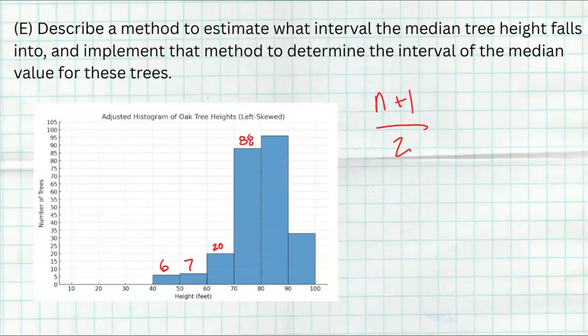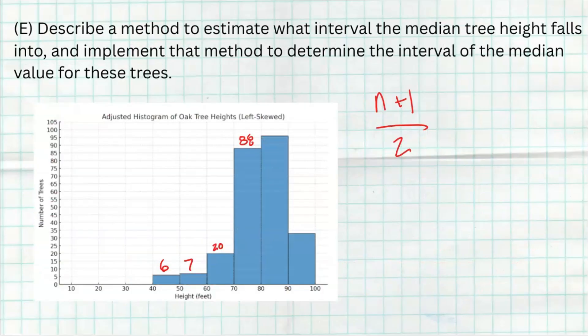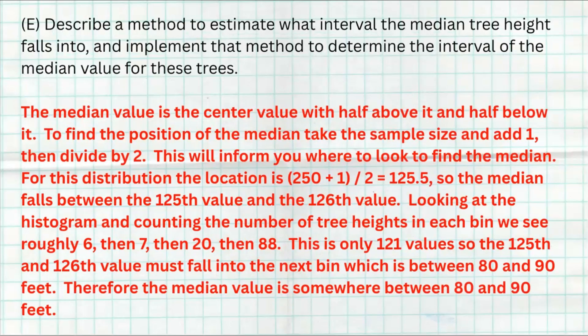I started counting. There's about six values in this first bin, seven values here, 20 values in this bin, and then this bin looks like 88. If you stop there and add up 6, 7, 20, and 88, at this point we're at 121 values. That means that the 125th and the 126th value, where the median falls, is going to have to be in that next bin. The median cannot be in this bin because there's only 121 values so far. The 122nd, 123rd, 124th, 125th, 126th values are going to have to be in this bin. That means that the median is somewhere between 80 and 90 feet. Is it closer to 80, closer to 90, or right in the middle? I have no idea. I just know that it's somewhere in that bin because that's where the 125 and the 126th data value fall.